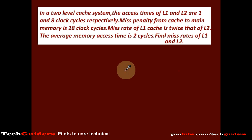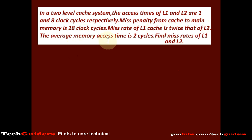Now consider this: in a 2-level cache system, the access times of L1 and L2 are 1 and 8 clock cycles respectively. The miss penalty from cache to main memory is 18 clock cycles. The miss rate of L1 cache is twice that of L2. The average memory access time is 2 cycles. Find the miss rates of L1 and L2.